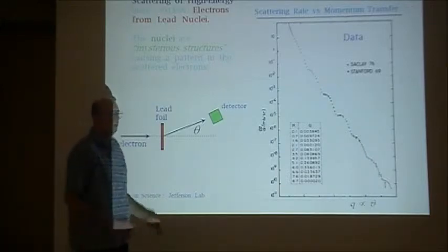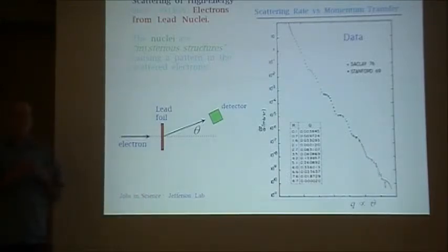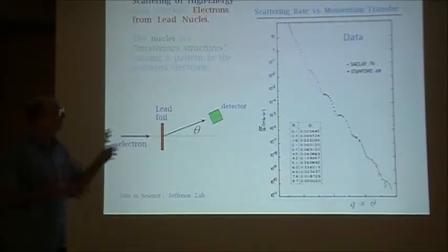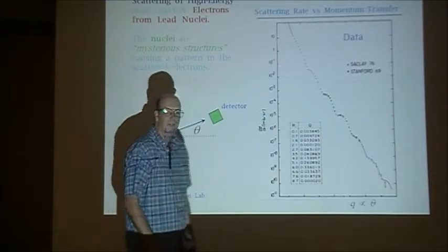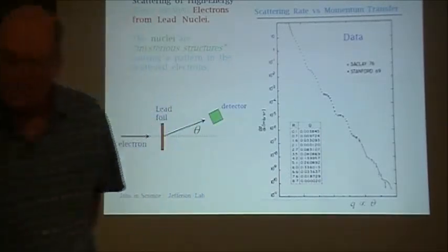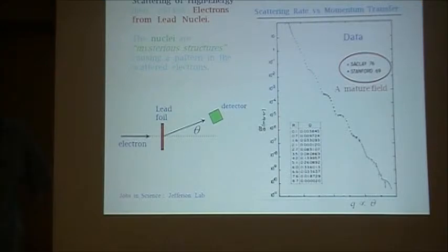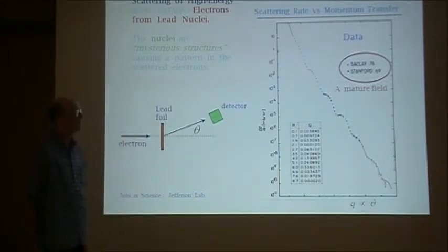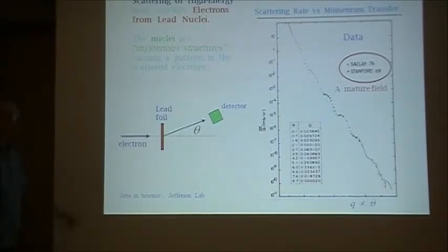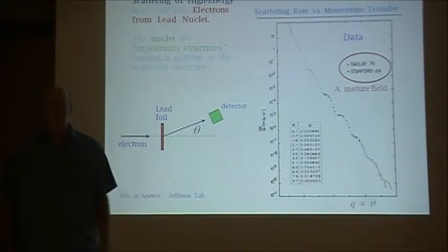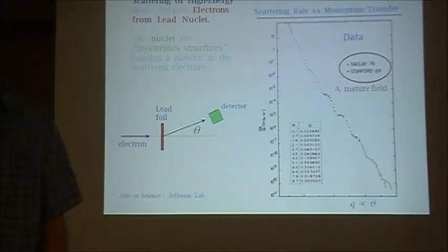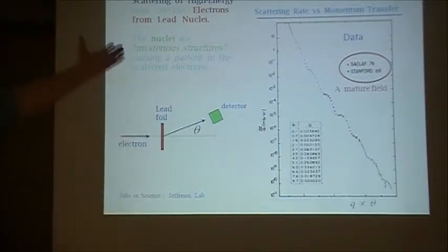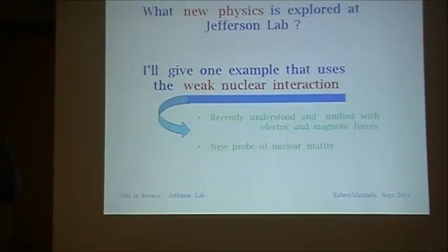Now how do you explain this pattern? Well, the simplest explanation would be to give you the size of the nucleus. From the size of the nucleus you can deduce this pattern. So I chose this data, even though it's kind of old data from the 1970s. It's from two labs that were precursors of Jefferson Lab. Saclay was a lab in France and they made these measurements in the 1970s. Stanford, the lab at Stanford is closed in the meantime. They made these kind of measurements in the 60s. So it's a mature field. And you might ask yourself, how can we learn something new? If you've got this data, why would you want to take more? So that's the question now. What new physics is explored at Jefferson Lab?